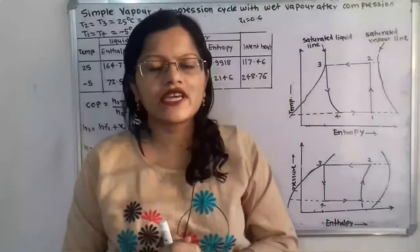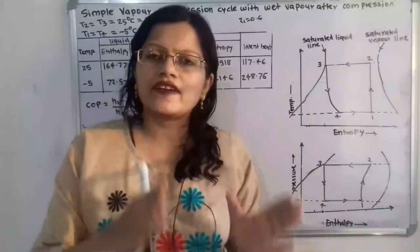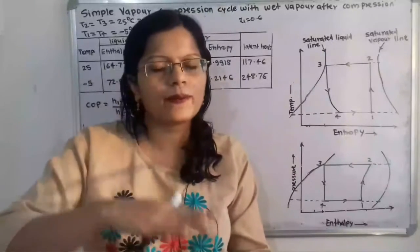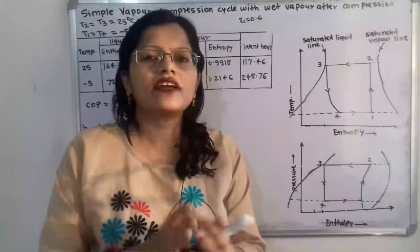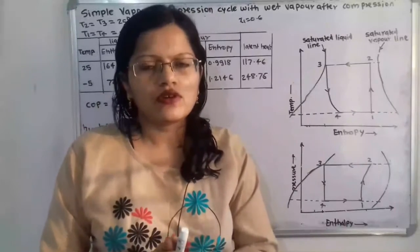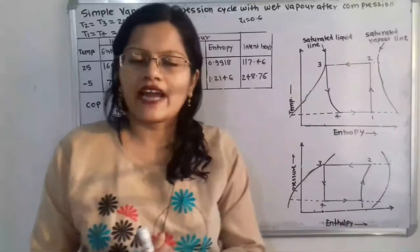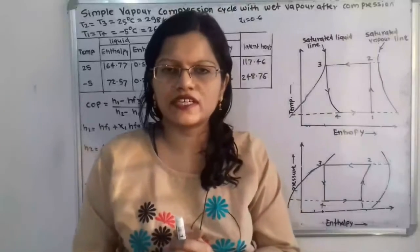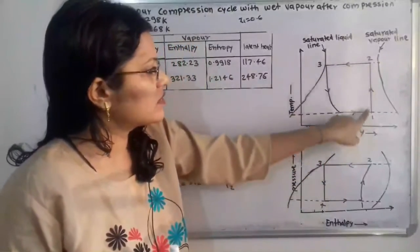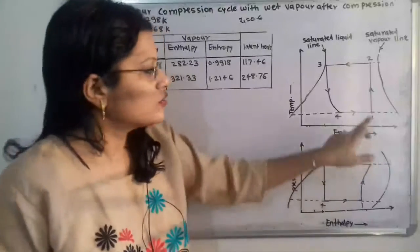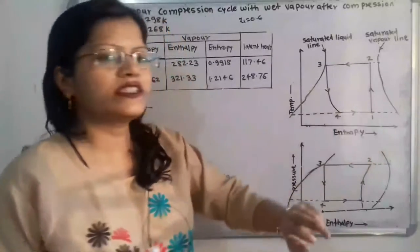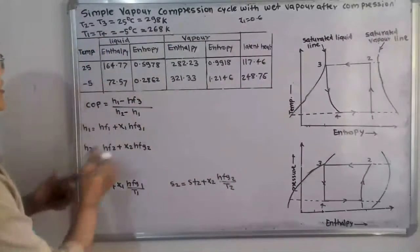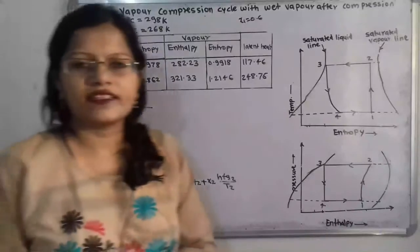If we observe the given data, during the suction stroke the dryness fraction is given. When there is the suction stroke during the compression, the refrigerant is entering through the suction valve, and at that point the dryness fraction is given. So when the compression process is getting started, process 1 to 2 is the compression process, and the dryness fraction at point 1 is given. So we can say that x1 is equal to 0.6.